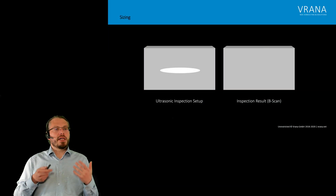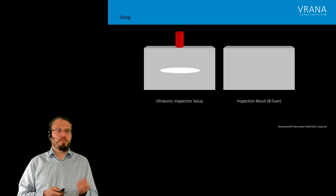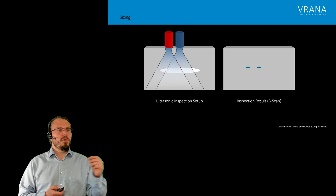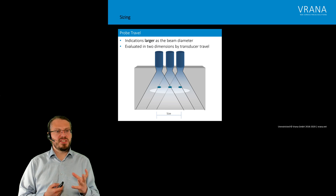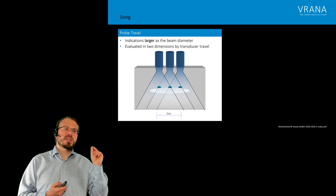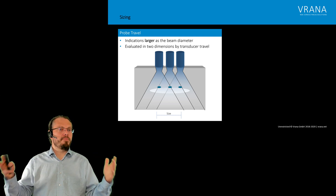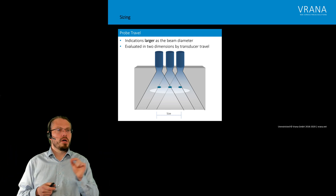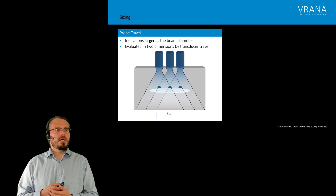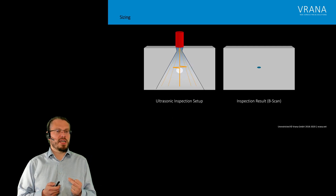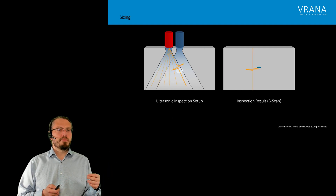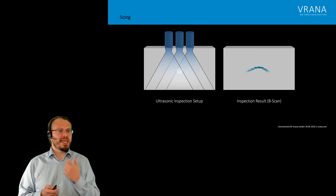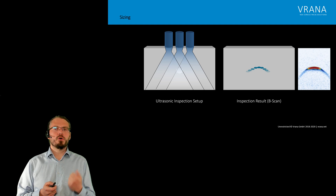If we are doing an ultrasonic inspection and we find an indication — we put our probe on the component, find the indication, move our probe — we see that indication has a certain size. That kind of sizing works only if the indication is larger, actually much larger, than our beam diameter, and we can use it to get our size in two dimensions. Now what do we do if we have a smaller indication? We will see it on our A-scan, but once we start moving our probe we get a very different shape.